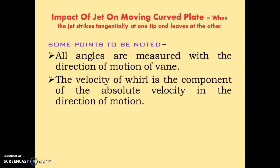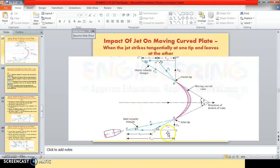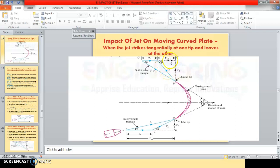The velocity of whirl is the component of the absolute velocity in the direction of motion, that is, the x-direction. At the inlet tip, Vw1 is the velocity of whirl, and V1 is the absolute velocity at inlet. So Vw1 is the component of V1 in the x-direction. Similarly, at the outlet tip, Vw2 is the component of V2, the absolute velocity at outlet, in the direction of motion of the plate, that is, the x-direction.